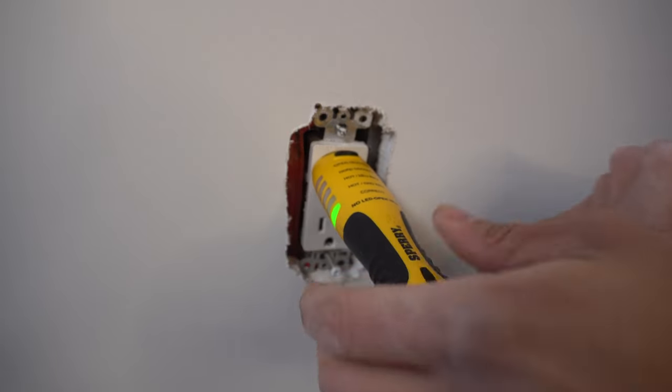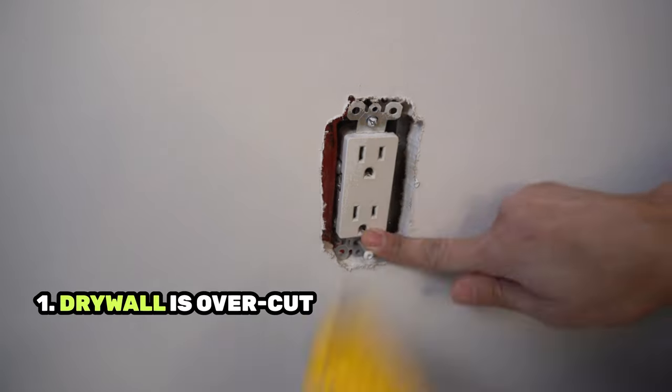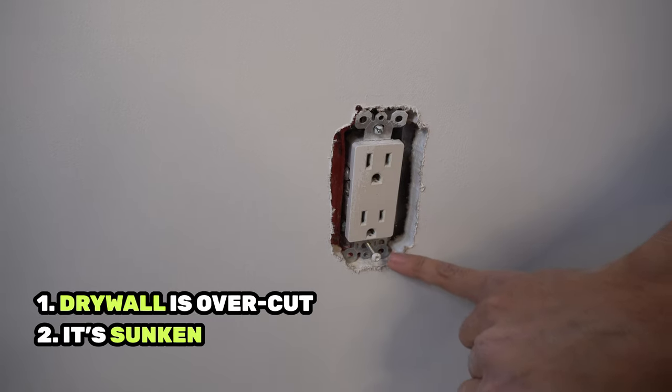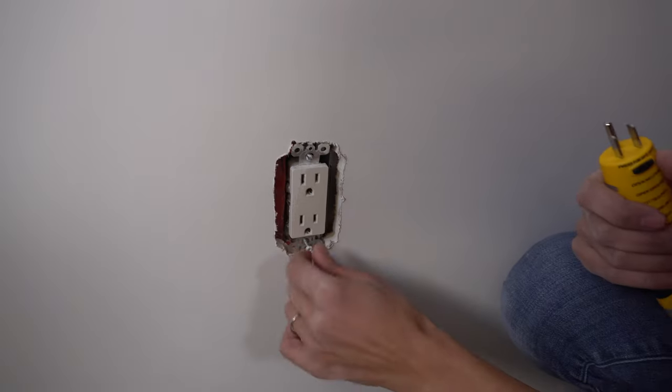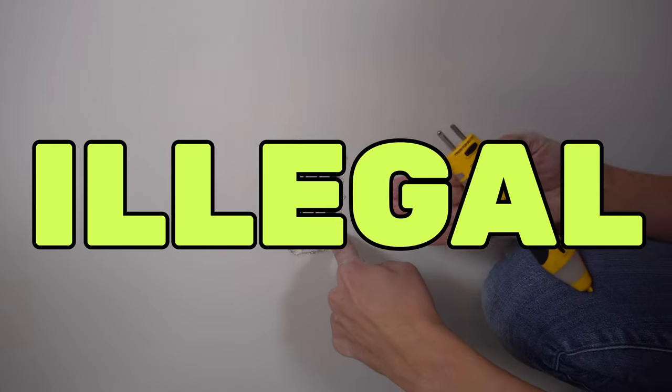So we can see that this is wired correctly, but it is actually overcut, meaning the drywall is cut way too far and it's sunken, meaning the box is recessed in behind the drywall. That is absolutely illegal.